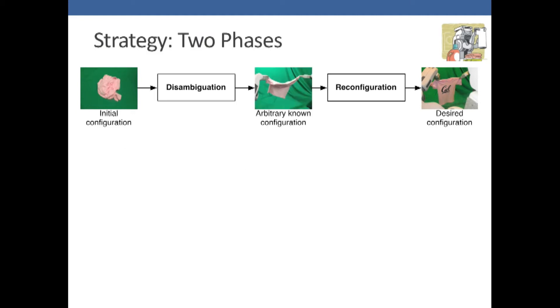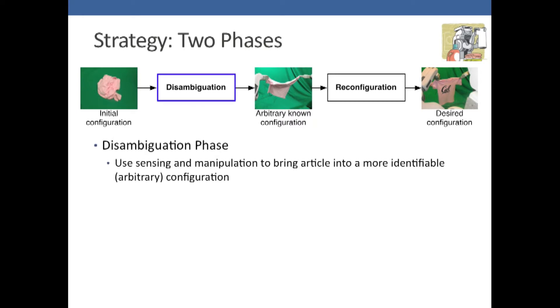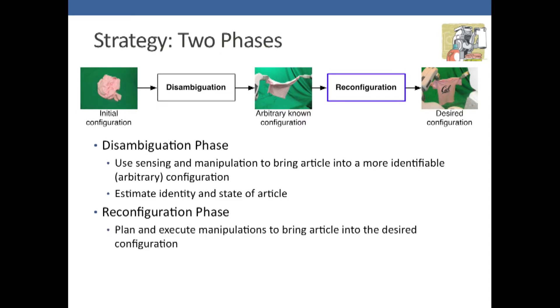Our strategy involves two phases. The first phase is the disambiguation phase, in which the robot uses sensing and manipulation to bring the article into a more identifiable configuration. We then estimate the state and identity of the article. The second phase is the reconfiguration phase, in which we plan and execute a sequence of manipulations to bring the article into the desired configuration.